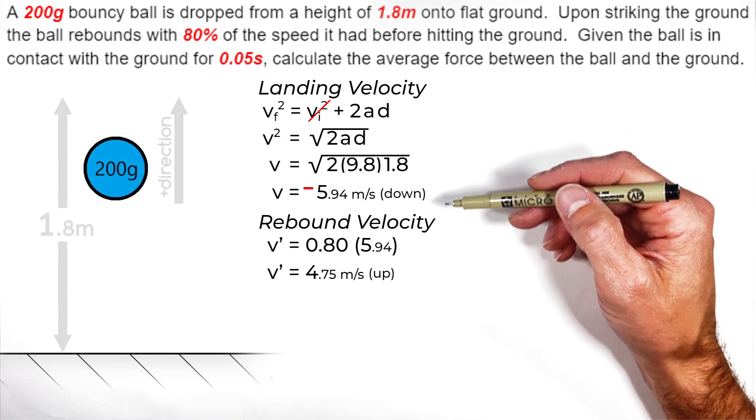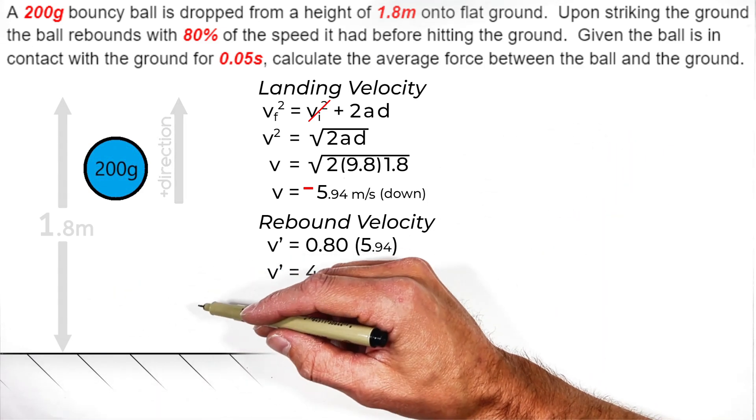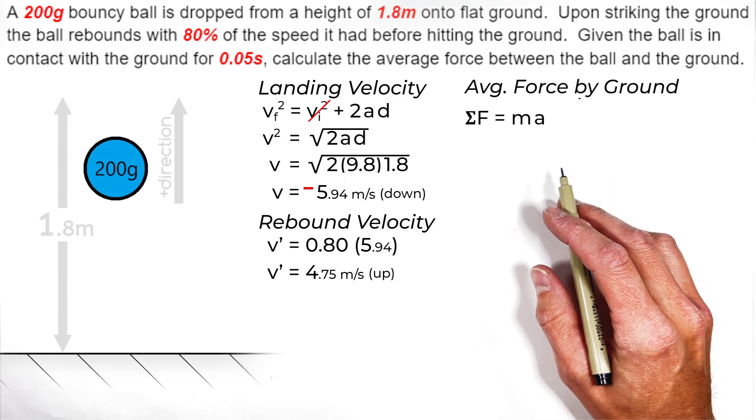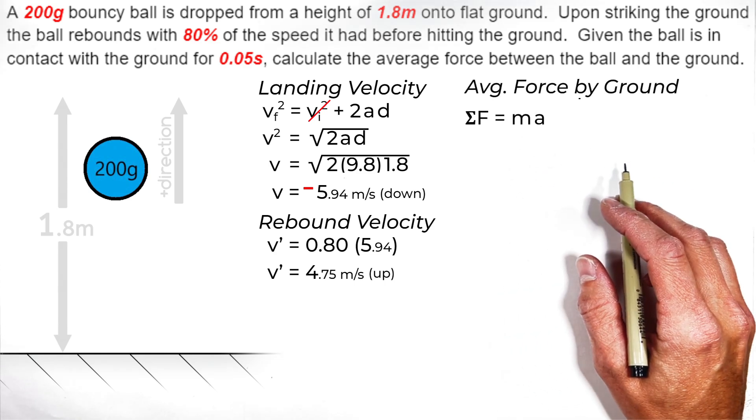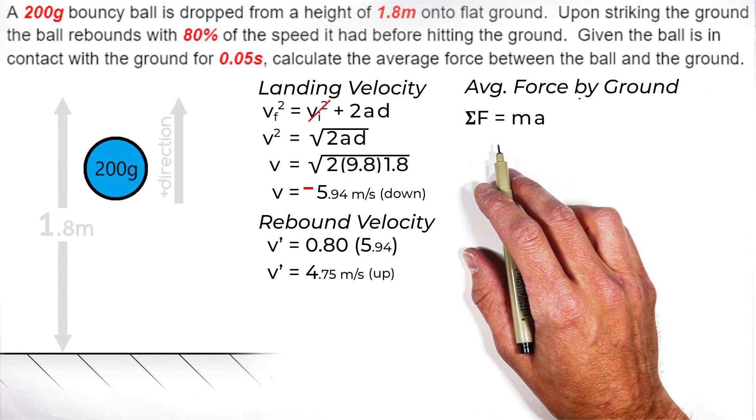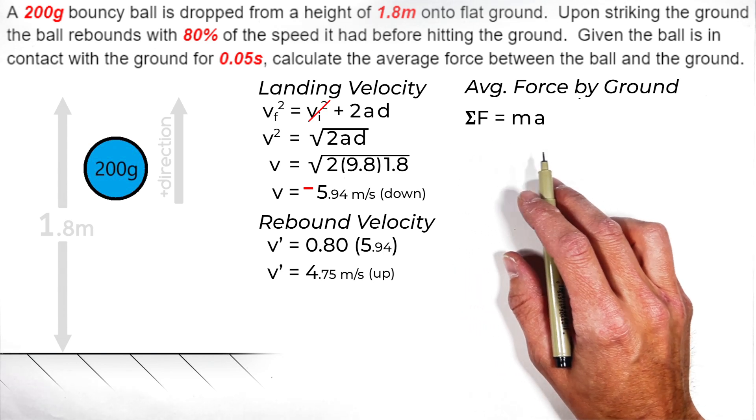But now that we know our initial and our final velocities when this collision occurs, we can turn to Newton's second law in order to solve for the average force. You see, you typically see the second law written as the sum of all forces on an object is equal to its mass times acceleration.